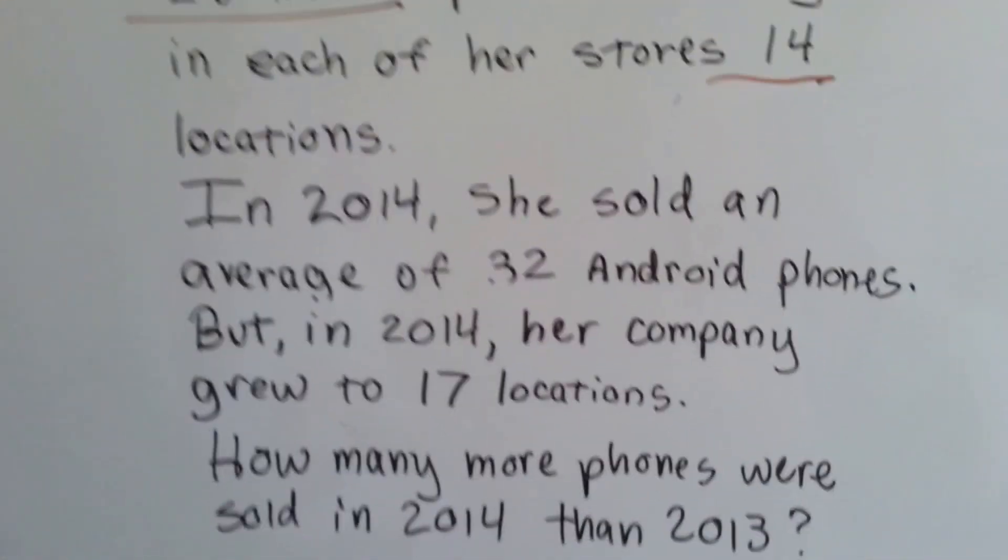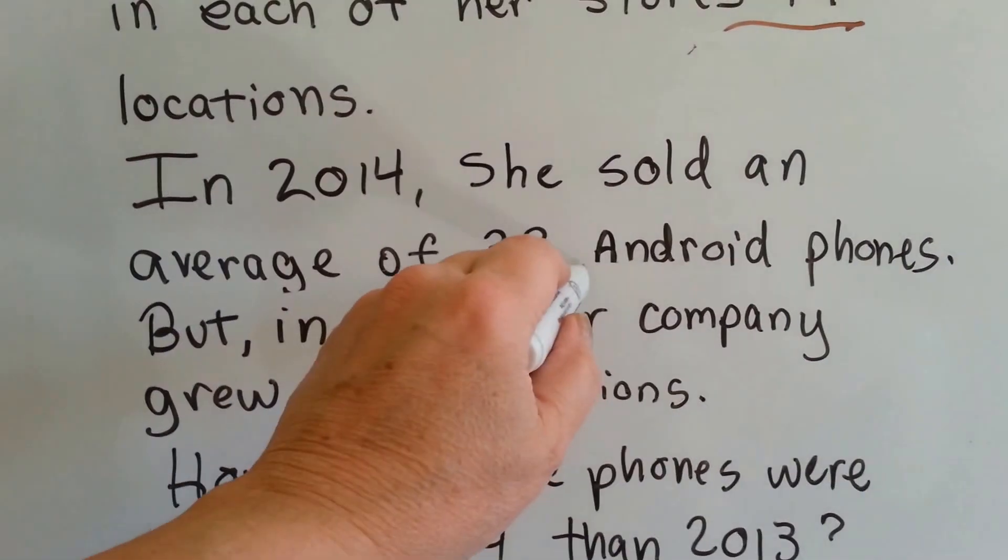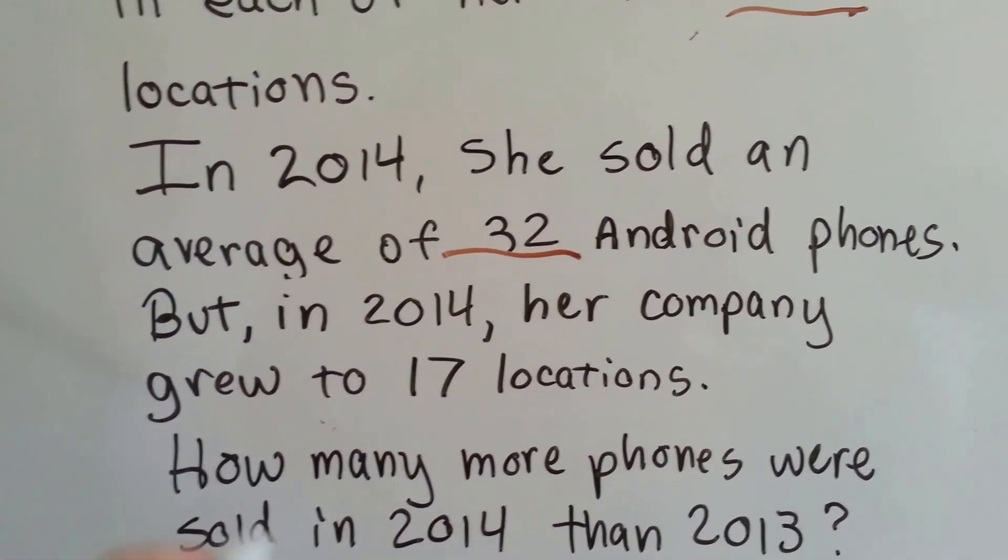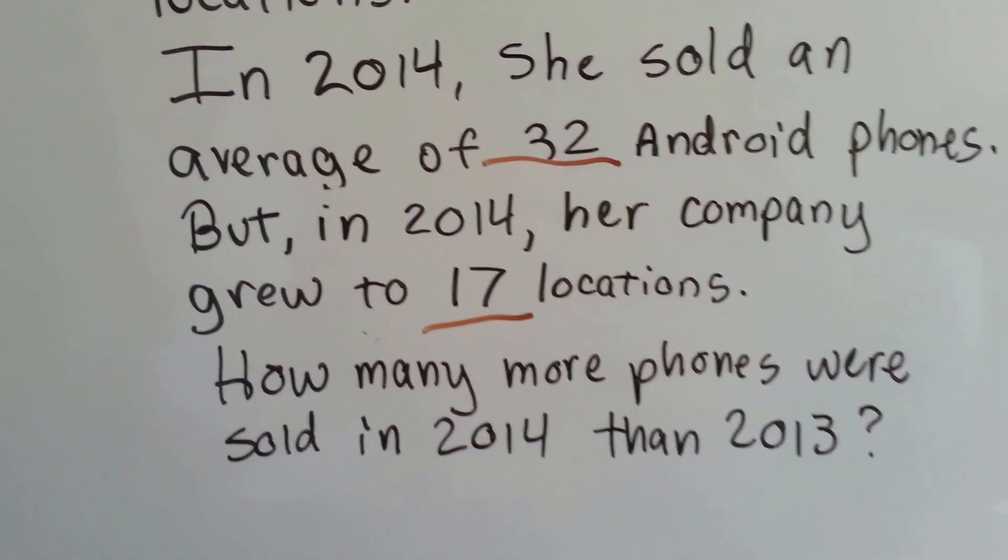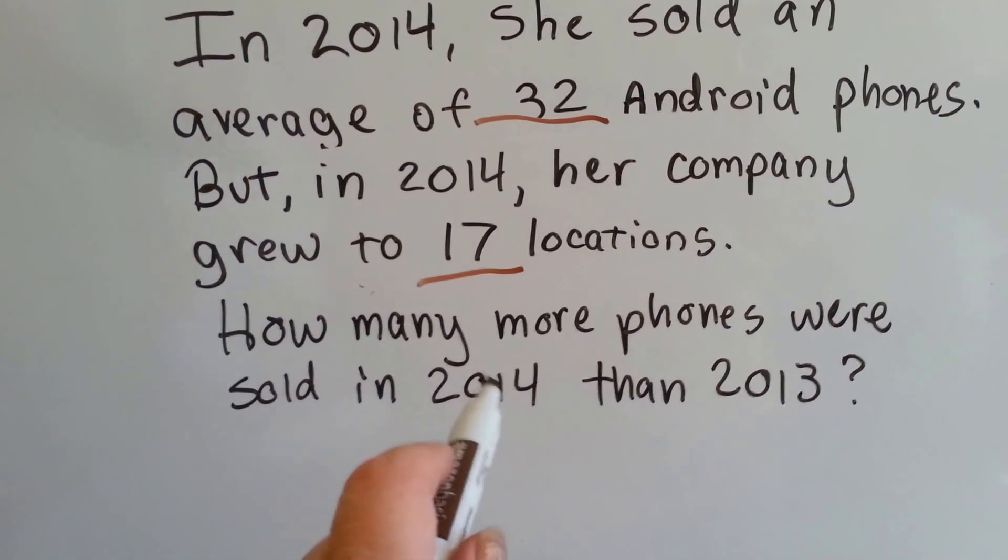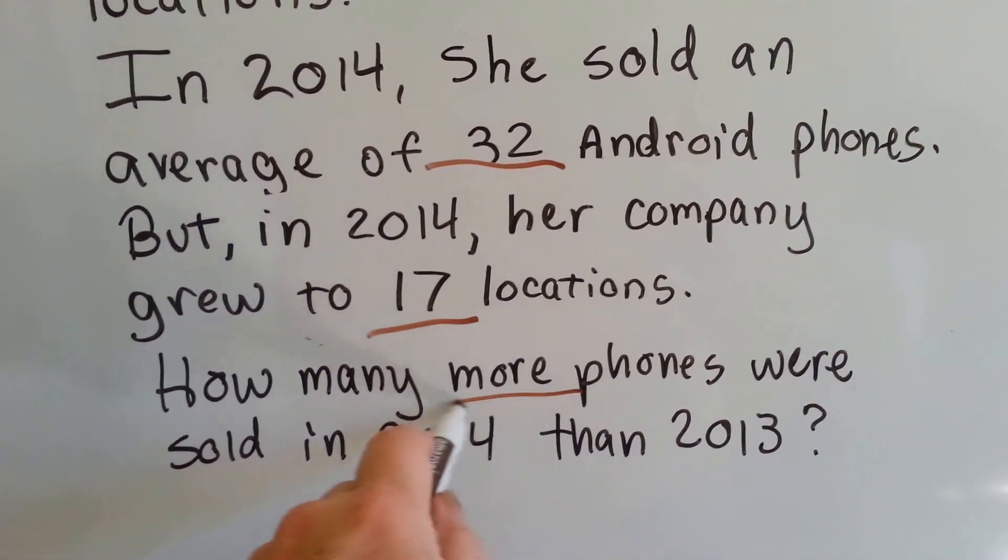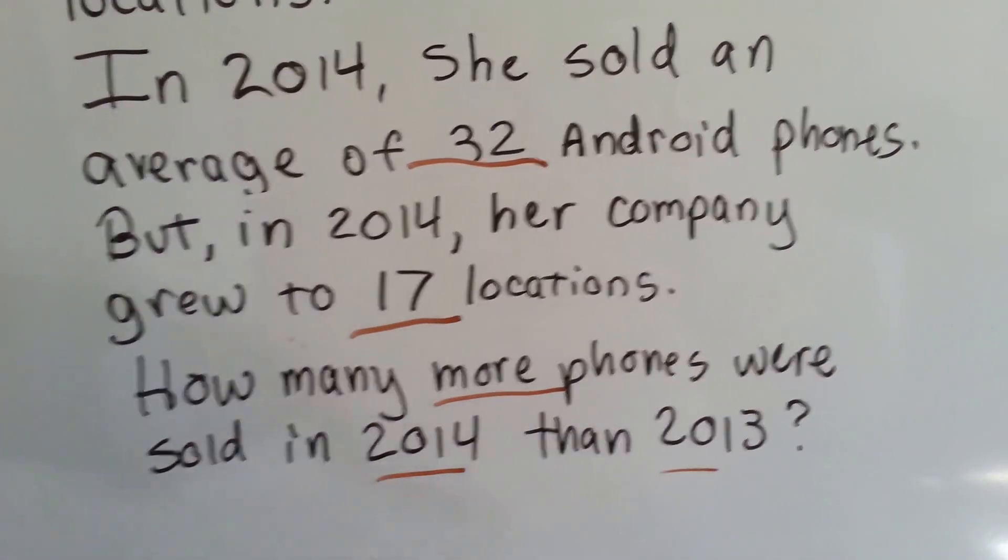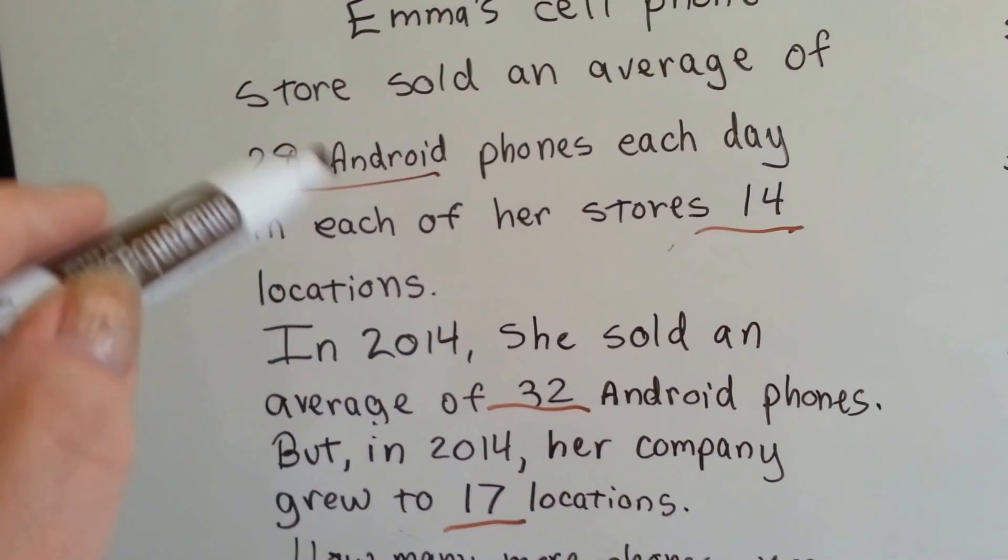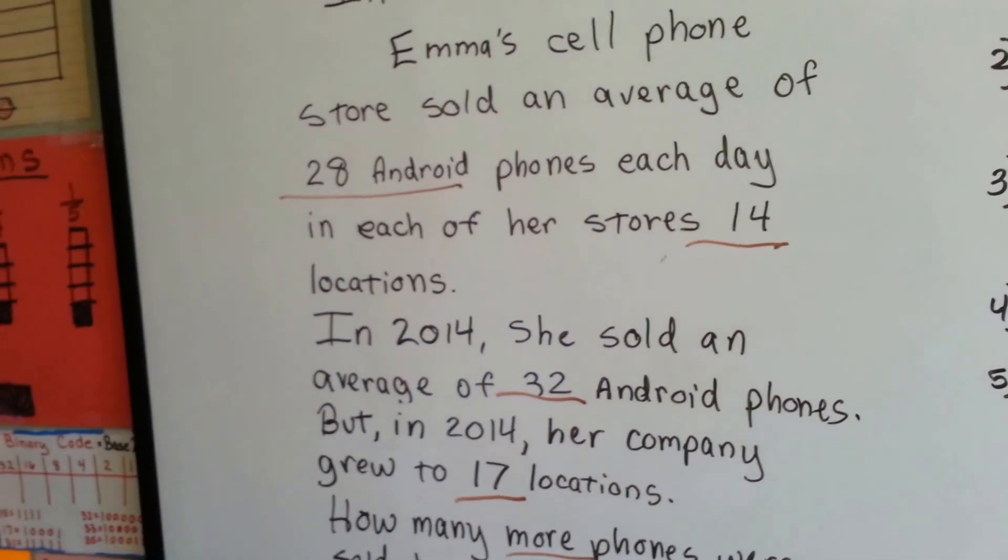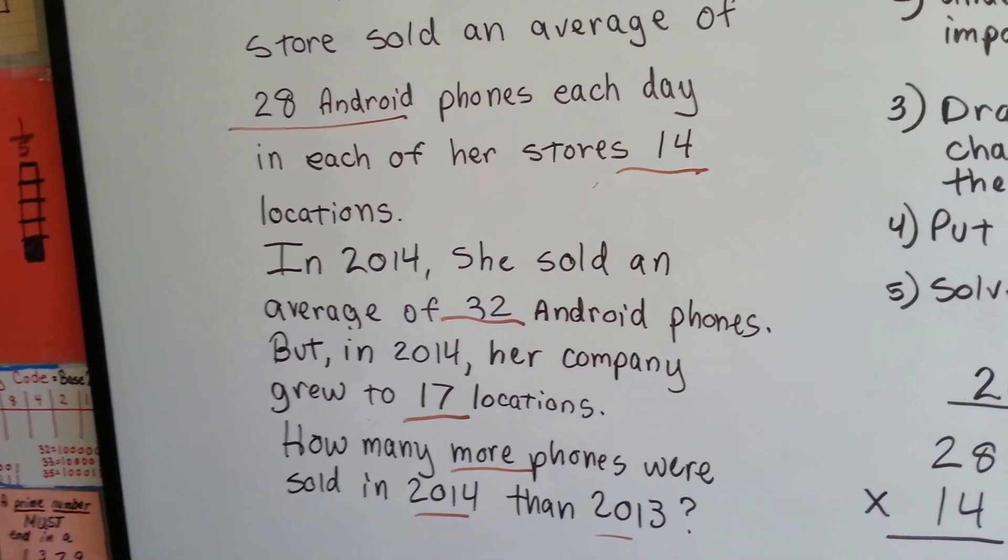In the year 2014, she sold an average of 32 phones. But in 2014, her company grew to 17 locations. How many more phones were sold in 2014 than 2013? So we need to know how many more were sold in that year than that year. The first thing we're going to have to do is figure out how to put this information together. We've underlined the important information, but now we need to draw a chart.